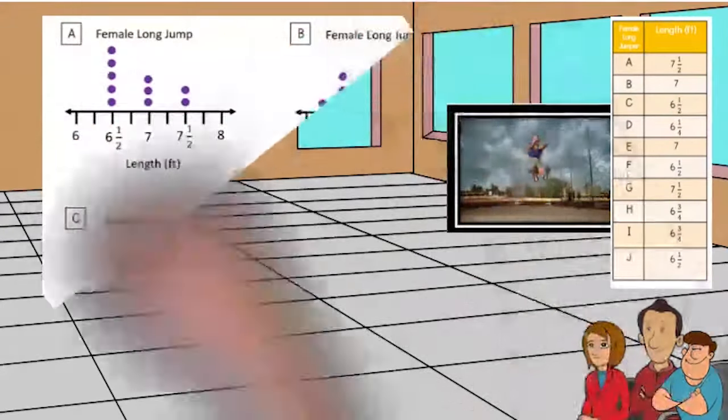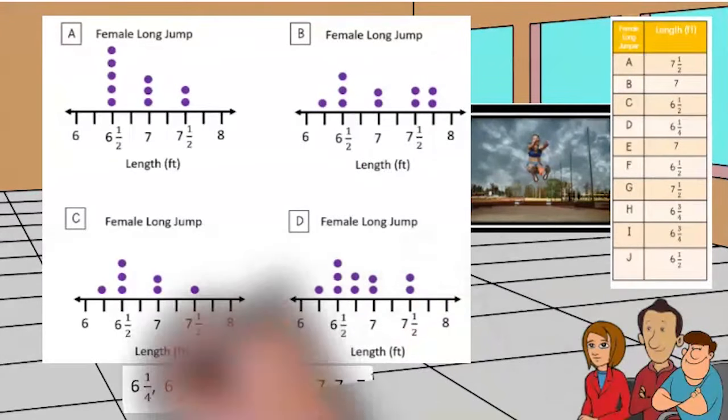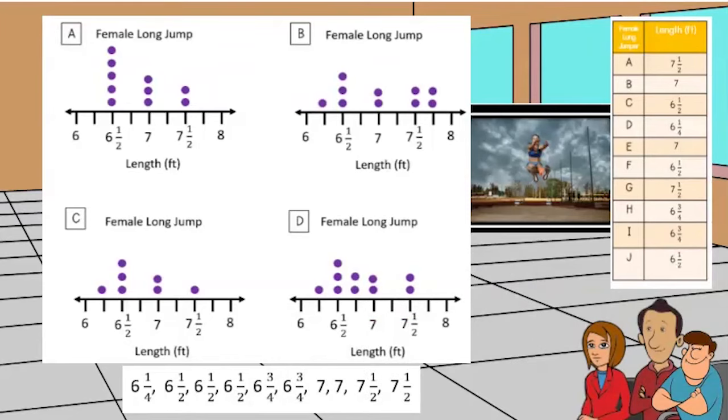Which dot plot represents the data in the chart? I will put the numbers in order while you figure out the dot plot. Okay, I notice there are four tick marks between each number. These tick marks represent a fraction.